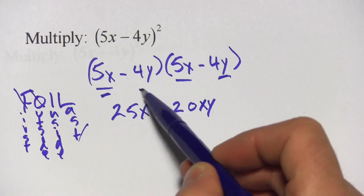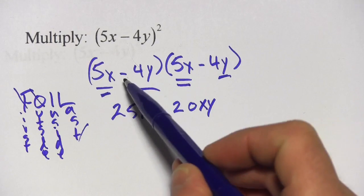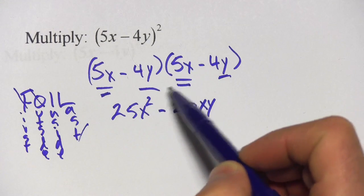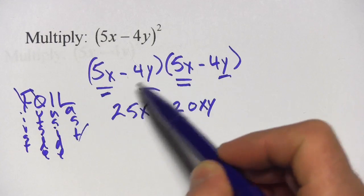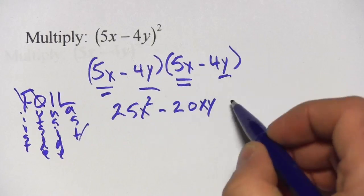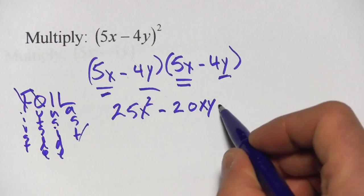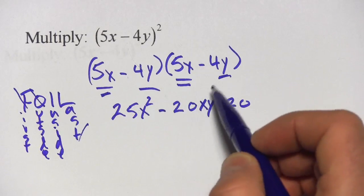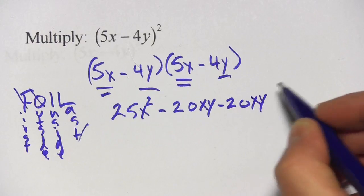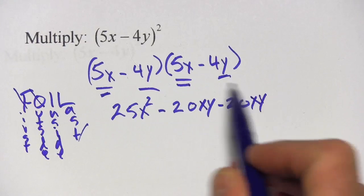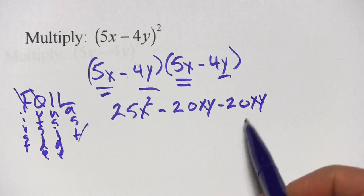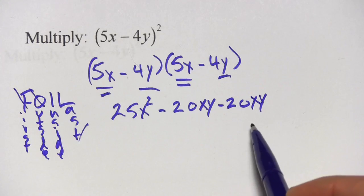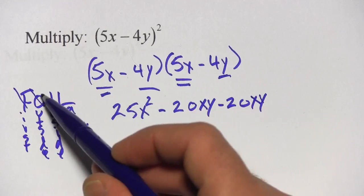Now the inside terms are these two, a negative 4y and a 5x, which is just what we did the last time but just in a different order. So negative 4 times 5 is negative 20 and y times x. You could write that as yx. I'm going to write it xy. It's the same thing. And these will be like terms that we have to add together. So I'm just writing them in the same order. Alright, and finally, so that's the inside.